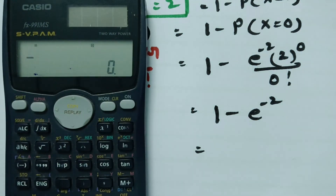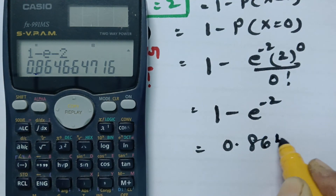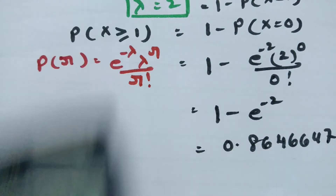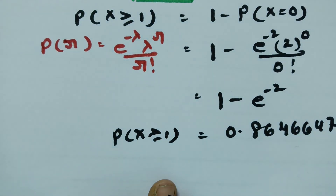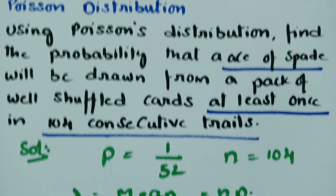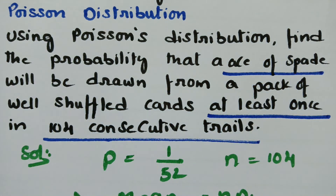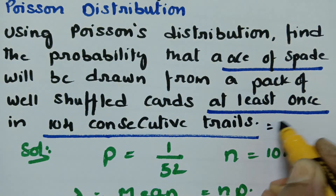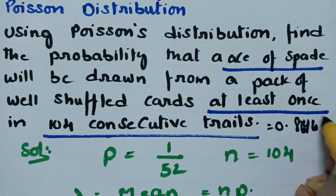So this value will be 1 minus e to the power of minus 2, which equals 0.8646647. This is the value for probability of x greater than or equal to 1. Using Poisson distribution, we found that the probability that the ace of spades will be drawn from a pack of well shuffled cards at least once in 104 consecutive trials is 0.86467.